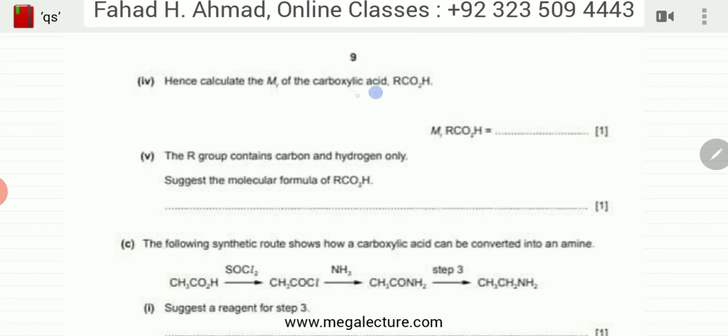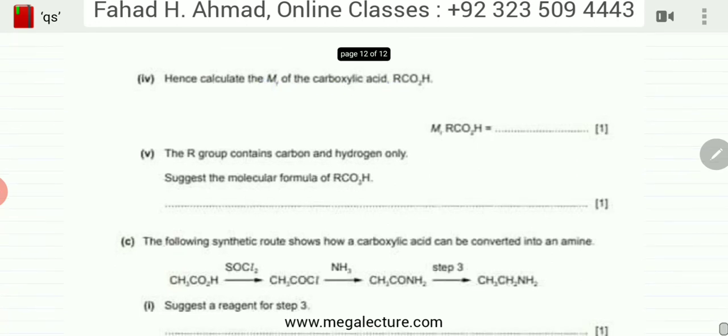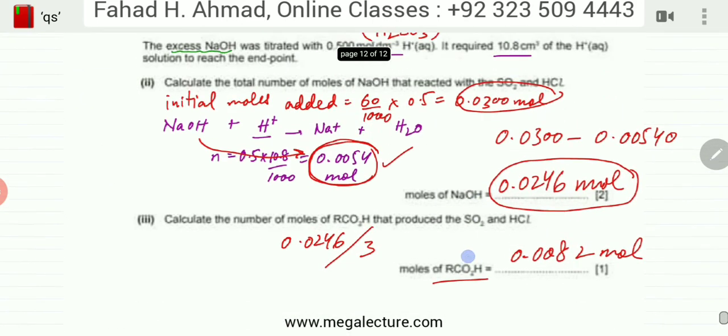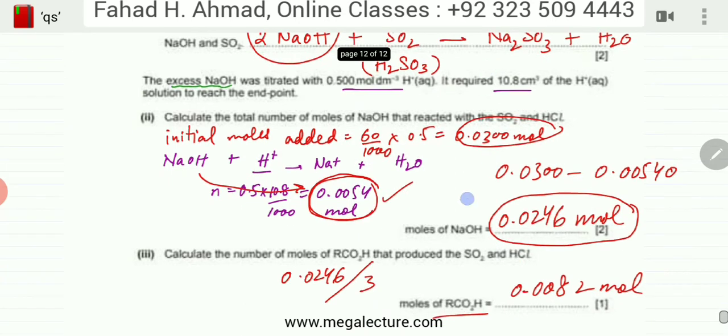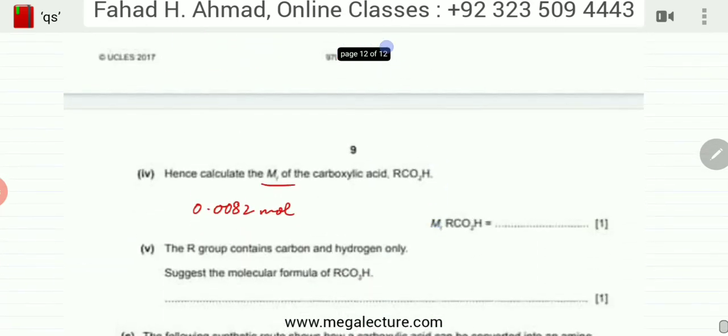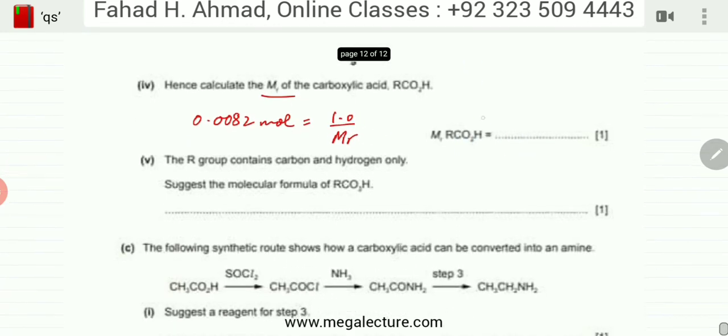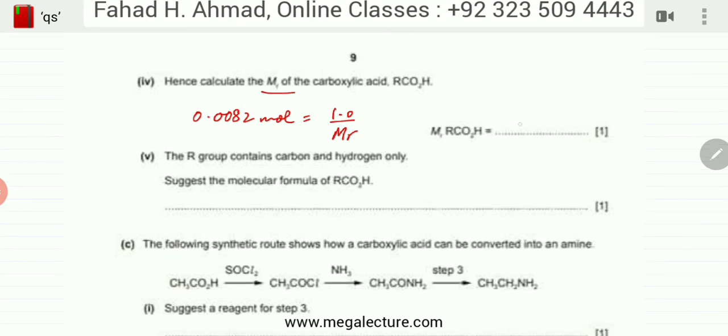In the next part we're asked to figure out the MR of the carboxylic acid. We have the moles: 0.0082 moles. The mass used for carboxylic acid is mentioned - it's a one gram sample. We know moles equals mass divided by MR. Using this formula, moles equals mass over MR, we can figure out the MR. This value comes very close to 122, so I'm rounding it off.